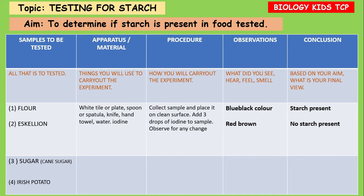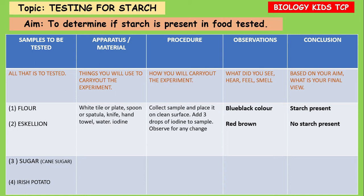Now you are supposed to test table sugar — that's the sugar used to sweeten your tea — Irish potato, which you would have in your kitchen used to make a salad, and some other food substances like rice. What you're going to do is use three drops of iodine, dropping them onto the food substance and observing for a color change. Your procedure is to collect the food sample and add three drops of iodine to it, then observe the sample to see if there is a color change.